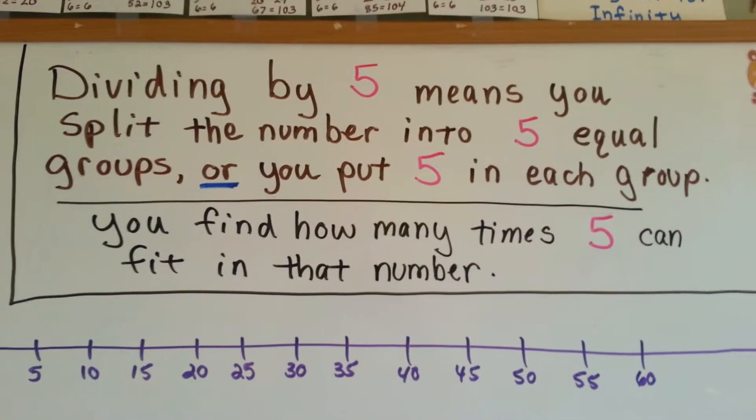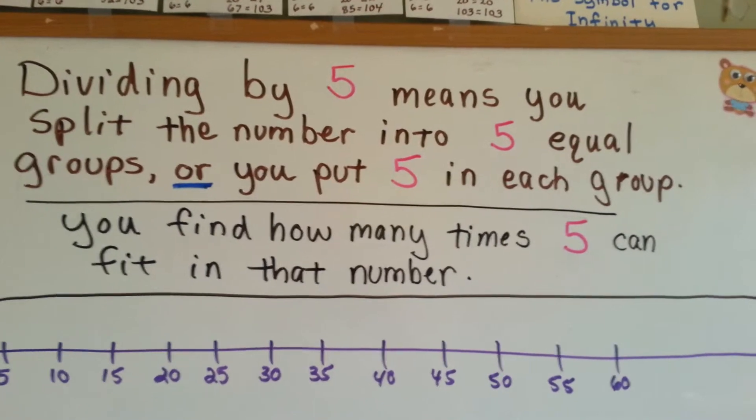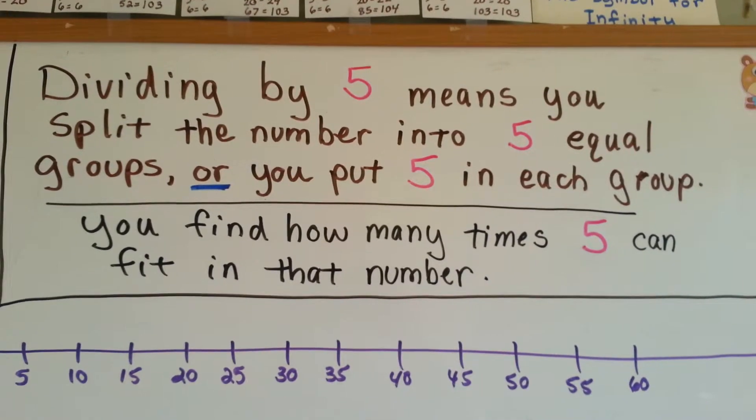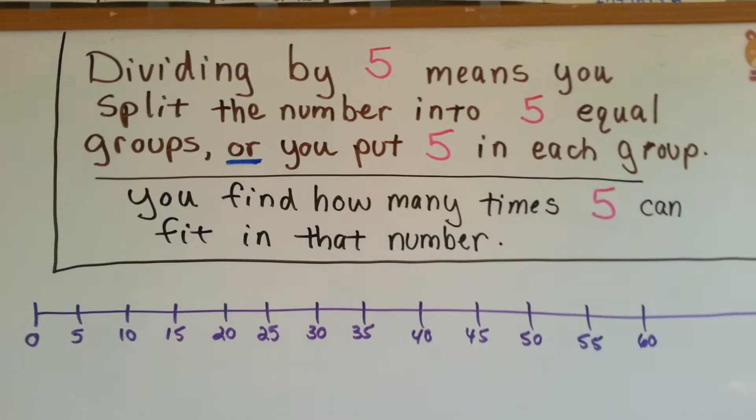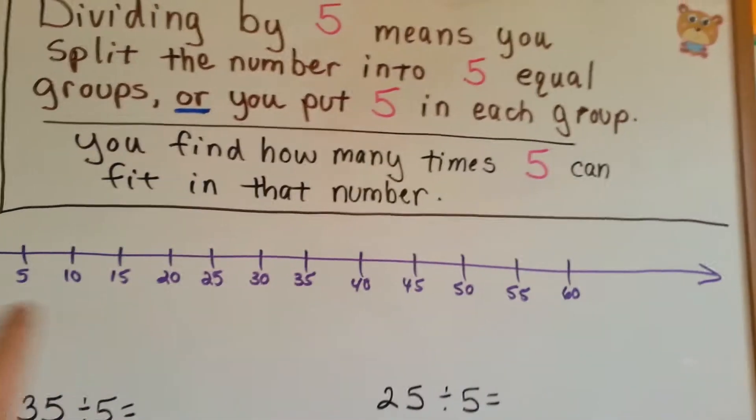Dividing by 5 means you split the number into 5 equal groups, or you put 5 in each group. You can find out how many times 5 can fit into that number. You can see I made a number line counting by 5's, that's going to help us.